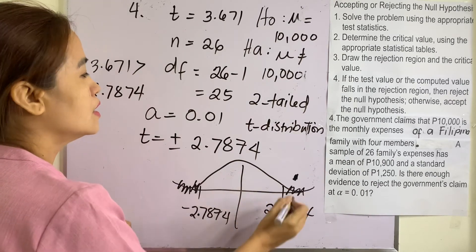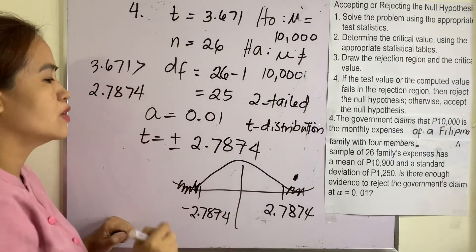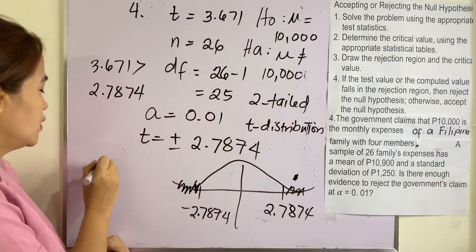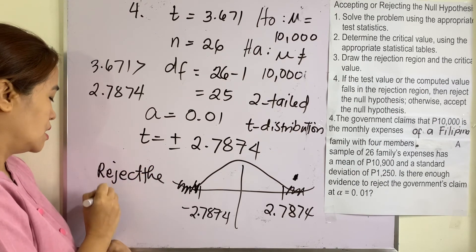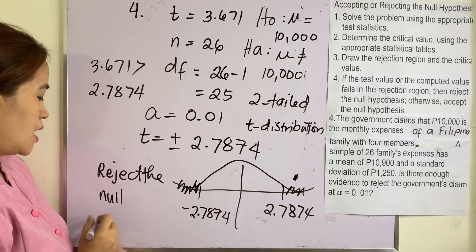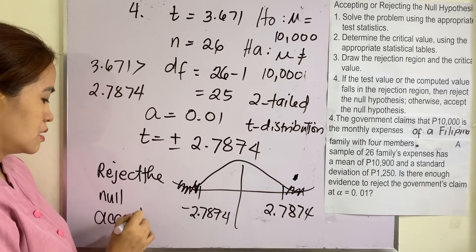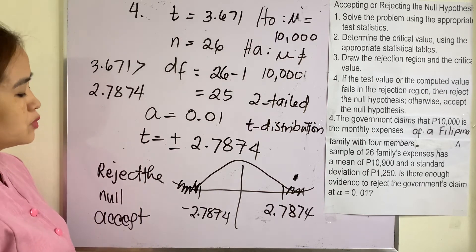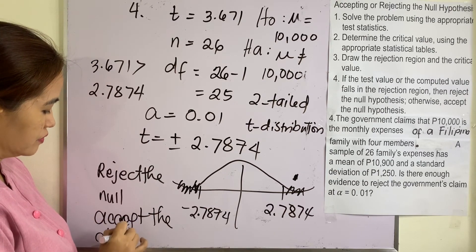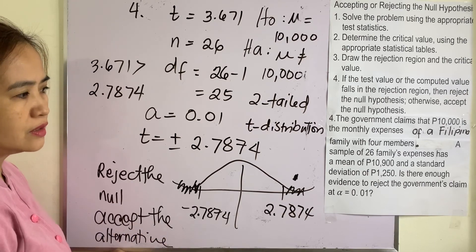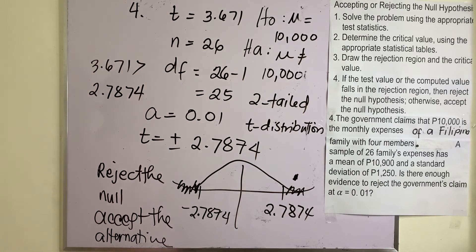Since 3.671 falls in the rejection region, we reject the null hypothesis and accept the alternative hypothesis. Therefore, yes, there is enough evidence to reject the government's claim.